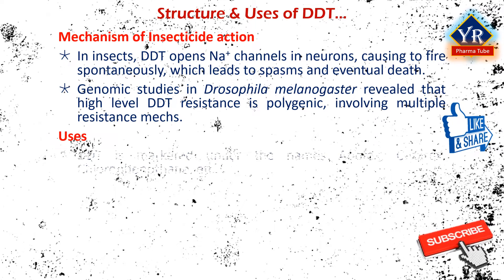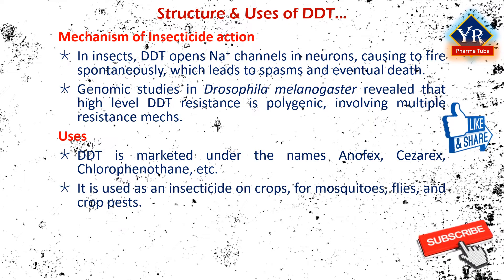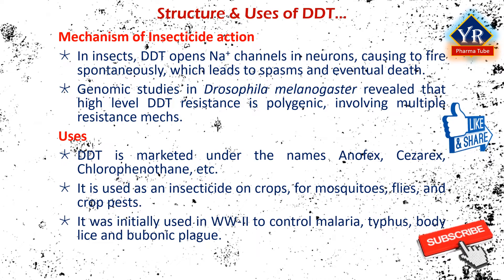DDT is marketed under the trade names Anophex, Caesarex, Chlorophenothene and others. It is used as an insecticide on crops, particularly for mosquitoes, flies and crop pests. It was initially used by the military in World War II to control malaria, typhus, body lice and bubonic plague.